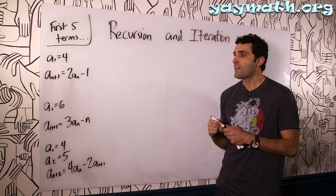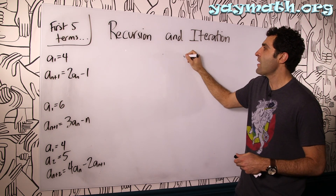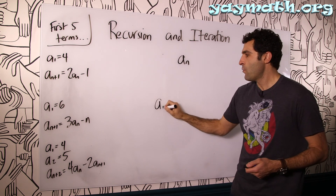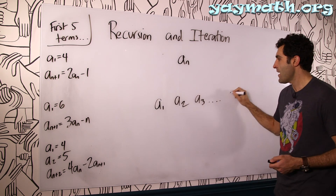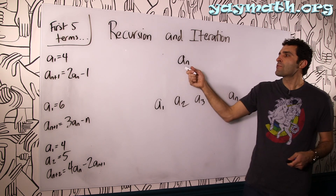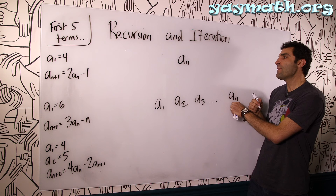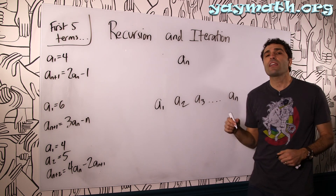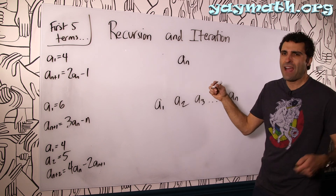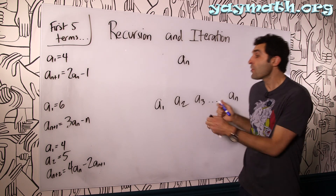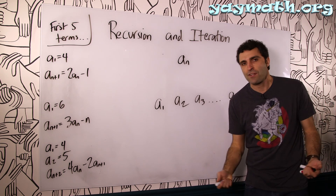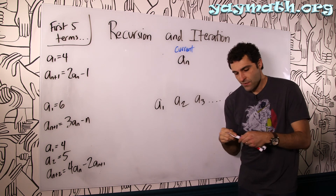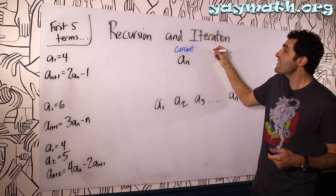Let's talk about what this all means. We have a sequence called a — think of it as a1, a2, a3, a_n. So a_n is some sort of term. If it's a3, you're talking about the third term; if it's a4, the fourth term; if it's a_n, the nth term. We can call that the current term — the term that we're currently talking about.